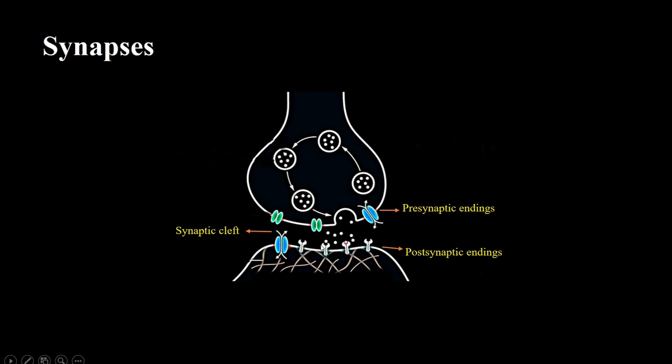The electrical impulse, when traveling down the axon of a neuron, triggers the release of these tiny vesicles which contain neurotransmitters. These vesicles then bind to the membrane of the presynaptic neuron and release their neurotransmitters into the synapse.